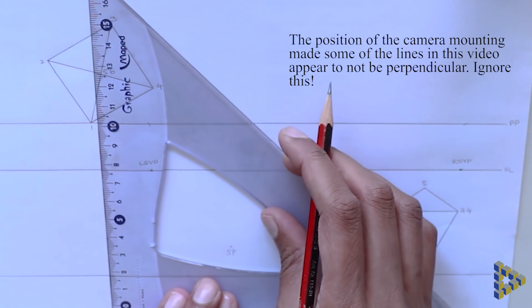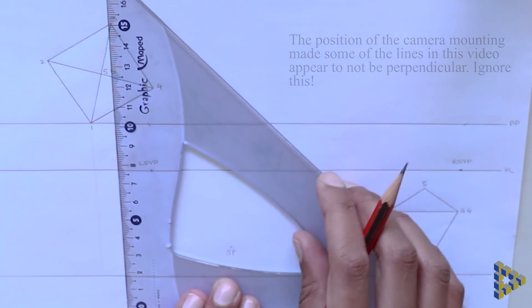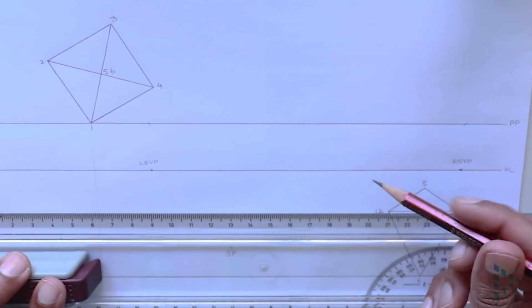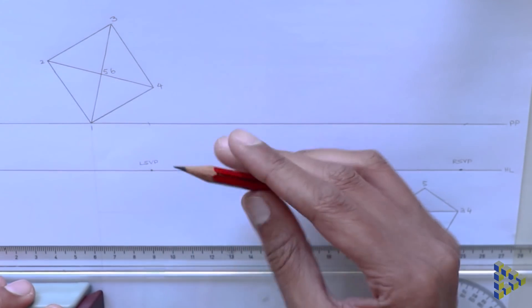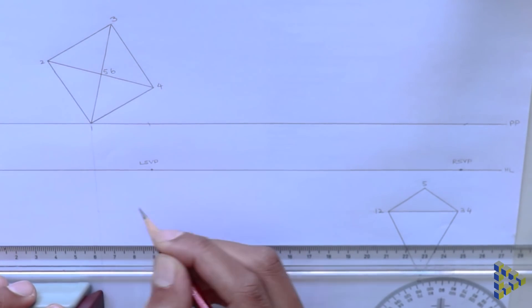Once the true point has been located in the perspective view it can be projected to the left and right side vanishing points. These lines are perspective lines extending out from point one.